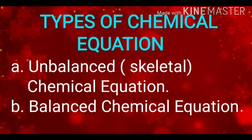Chemical equations can be broadly classified into two types: (A) an unbalanced chemical equation, which is also called a skeletal chemical equation, or (B) a balanced chemical equation. In an unbalanced chemical equation, if we count and compare the number of atoms of each element on the left hand side and right hand side of the arrow, the number of atoms of each element is not the same on both sides. Such a chemical equation is also called a skeletal chemical equation.